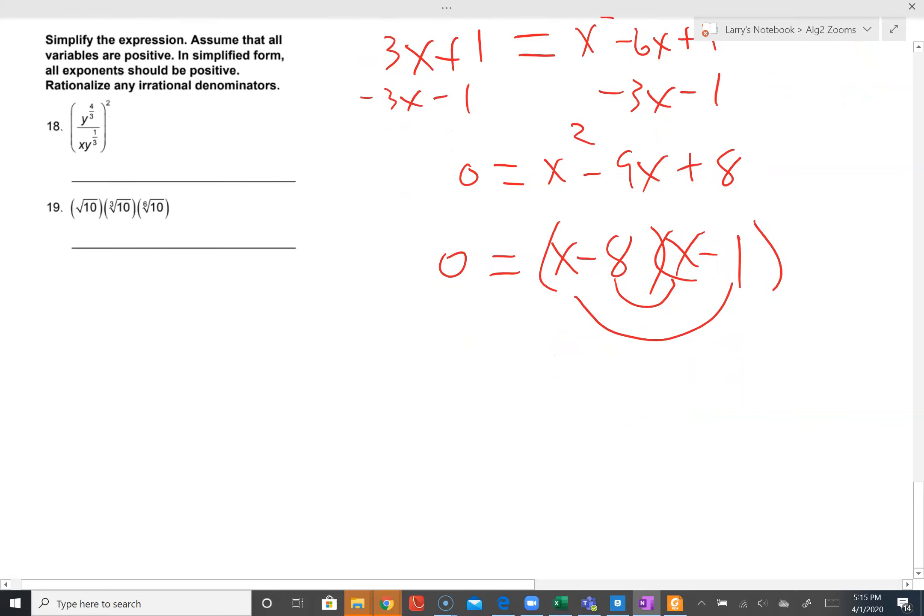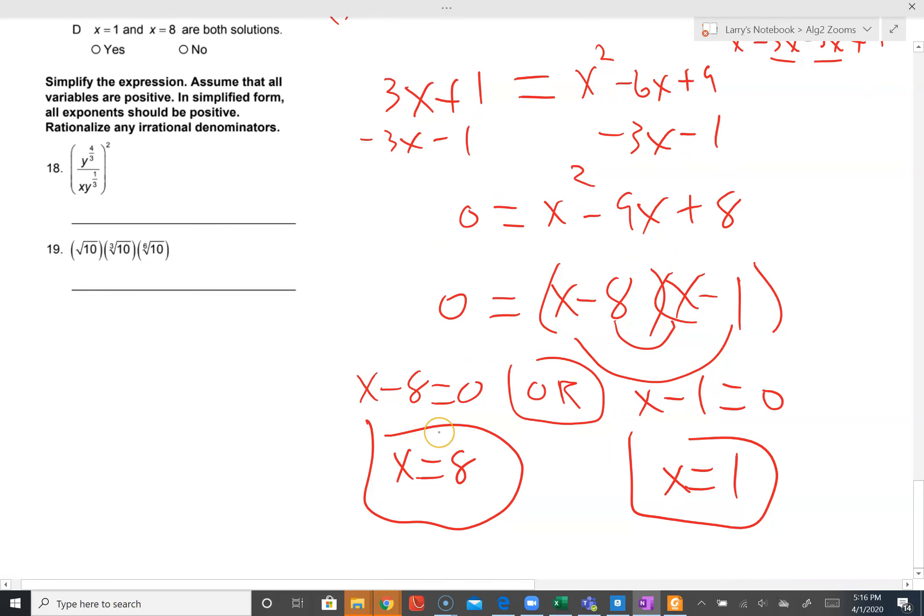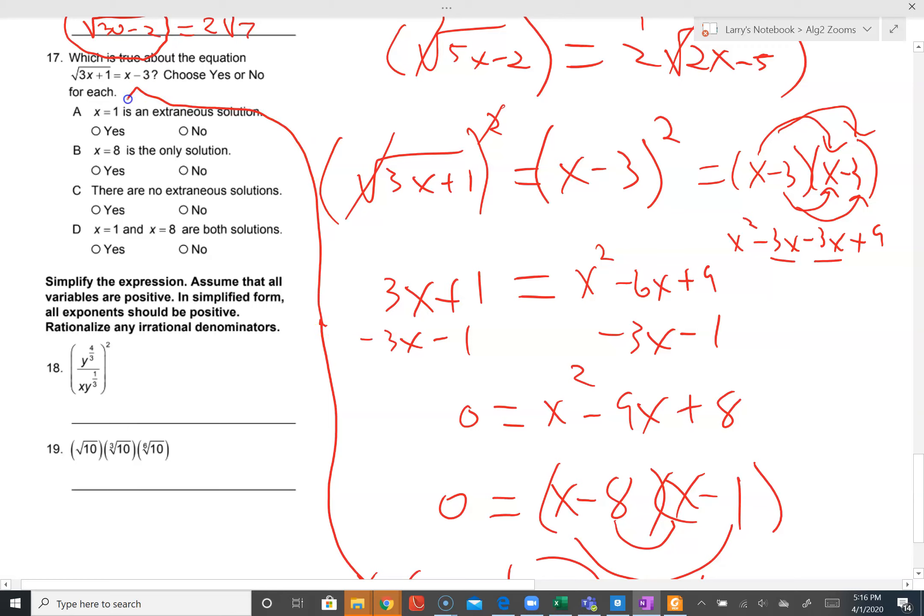We have two factors multiplied together to give zero, zero product property. I can say that x minus eight equals zero or x minus one equals zero. X is eight, here x equals one. We could also solve by graphing, complete the square, quadratic formula. But these might not work, particularly when you have a square root on one side and an algebraic expression on the other. Substituting eight: eight minus three is five, three times eight is 24 plus one is 25, square root of 25 is five. Eight works.